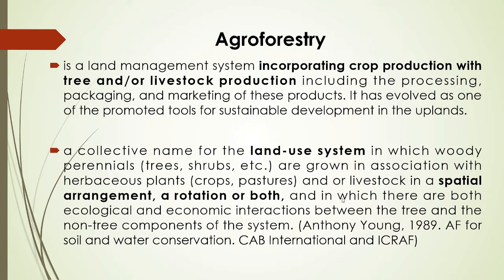Agroforestry is a land management system incorporating crop production with tree and/or livestock production, including the processing, packaging, and marketing of these products. It has evolved as one of the promoted tools for sustainable development in the uplands. According to Anthony Young in 1989 in Agroforestry for Soil and Water Conservation (CAB International and ICRAF), it is a collective name for land use systems in which woody perennials like trees and shrubs are grown with herbaceous plants like crops and pastures and/or livestock in a spatial arrangement, rotation, or both, with ecological and economic interactions between tree and non-tree components.